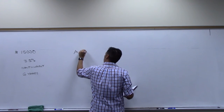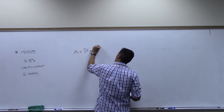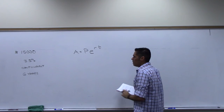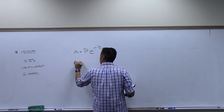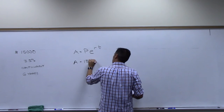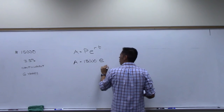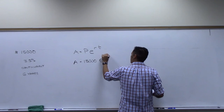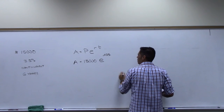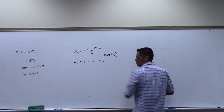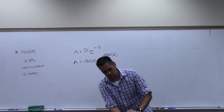A equals PE to the RT is what we're working with here. So the amount that'll be in the account will be fifteen thousand, and then E to the R — did you convert it to 0.035? Yes. And then T you put six? Yes. Then that should be right. Let's see what we get.